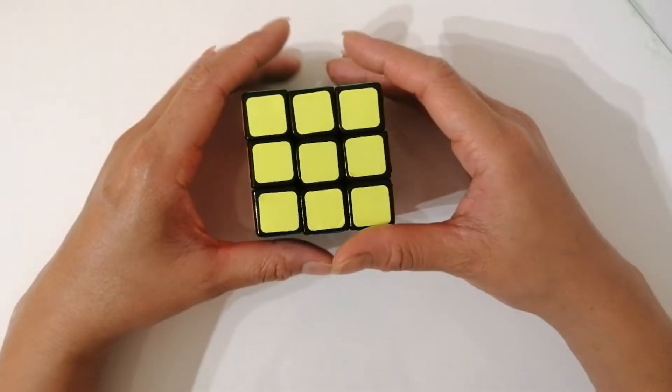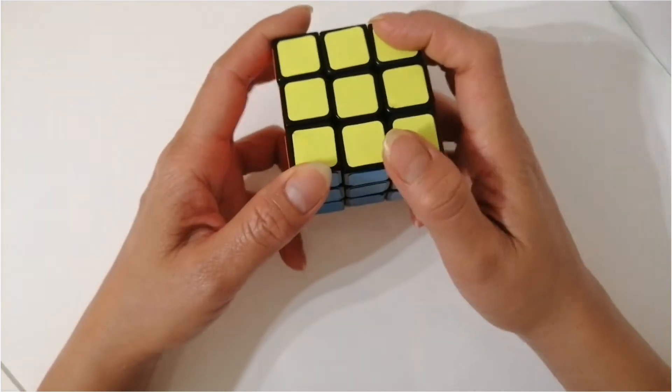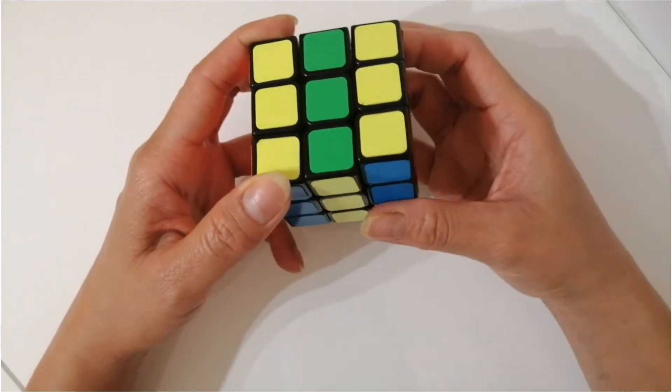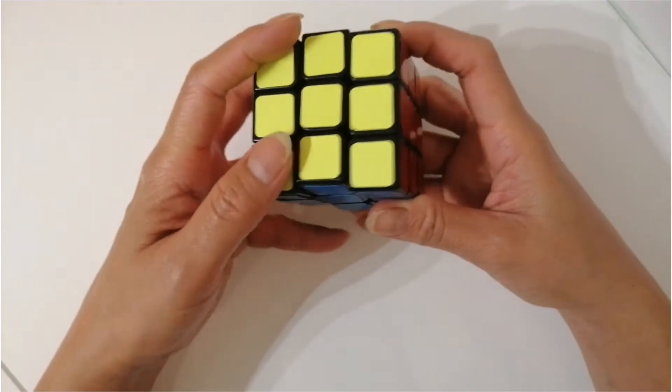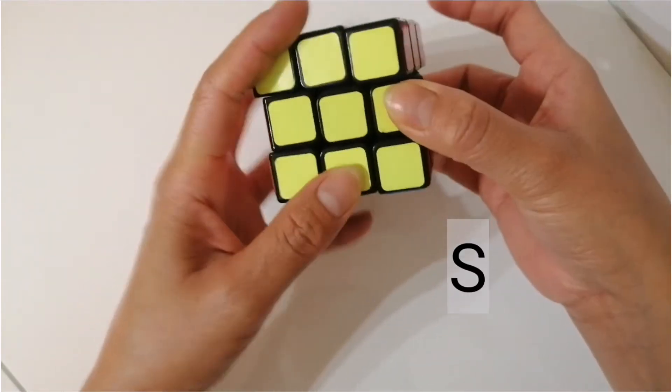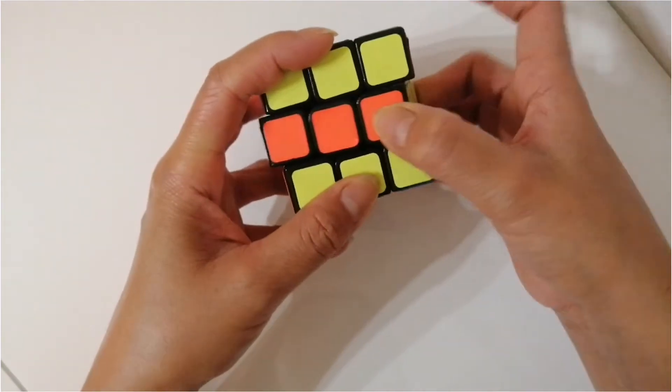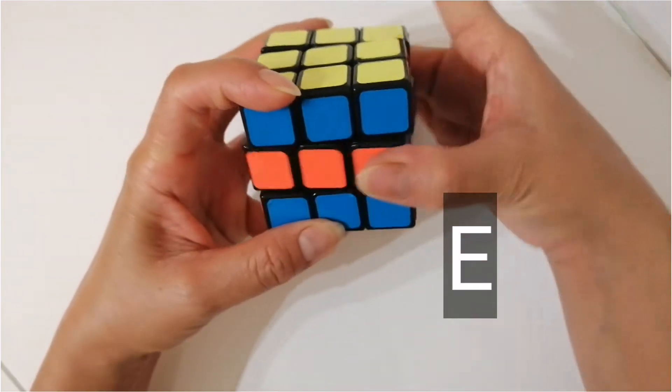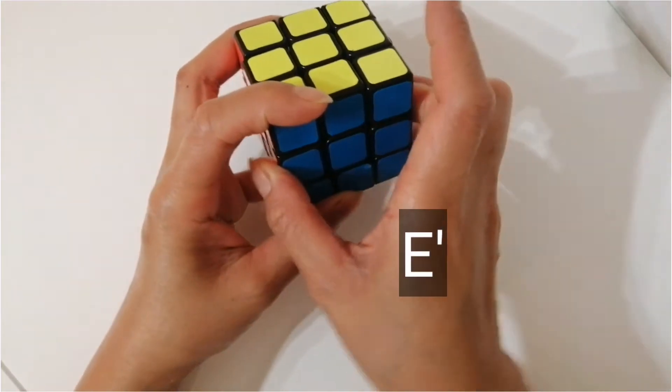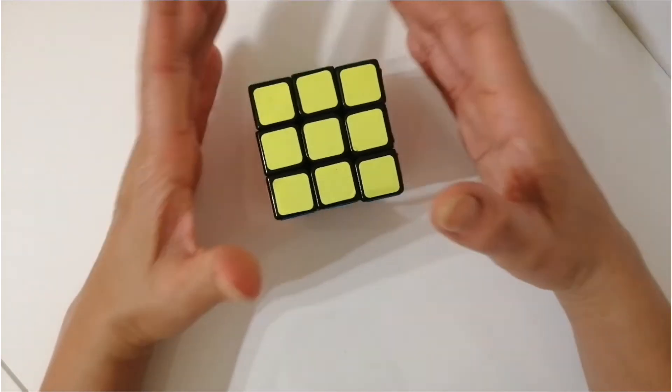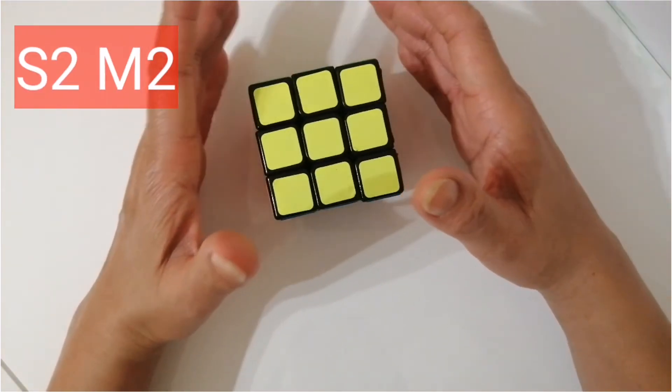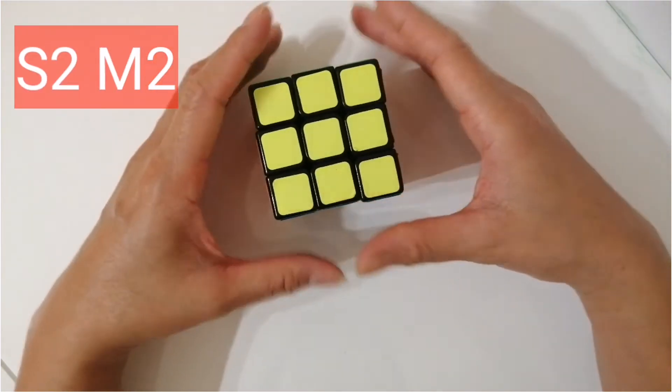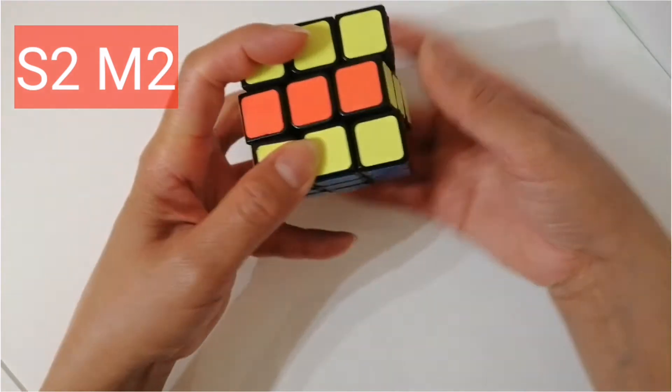So M is, S is, E is. S2 M2 is the algorithm of side stripe.